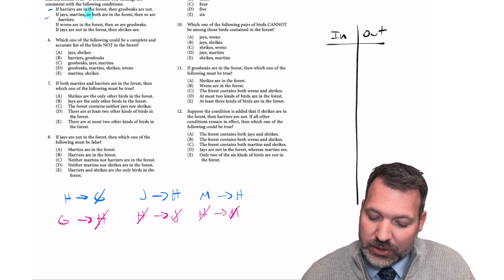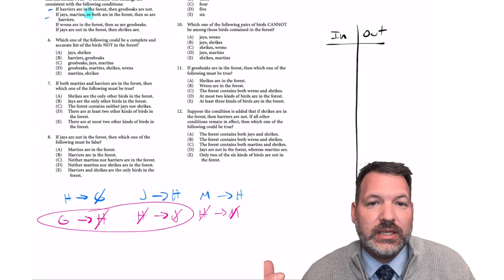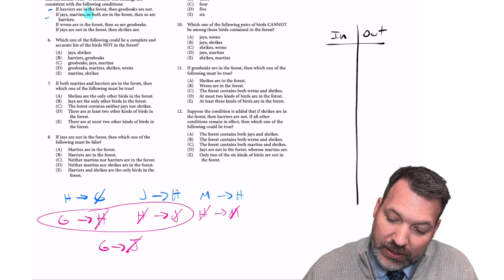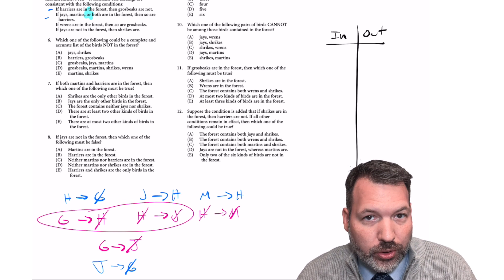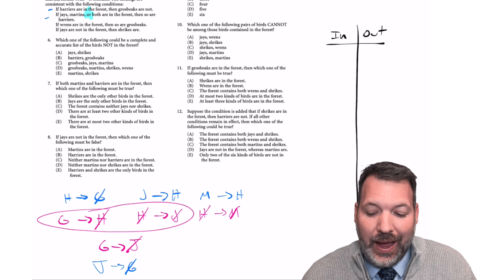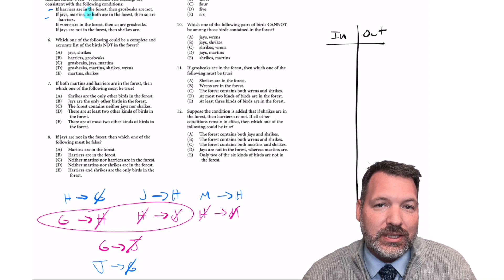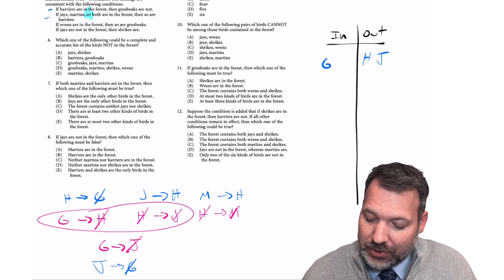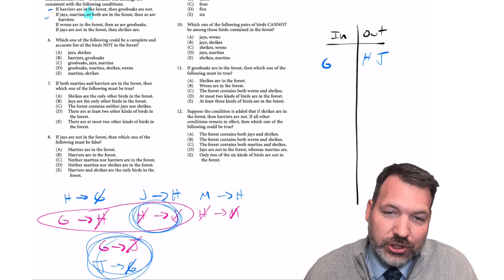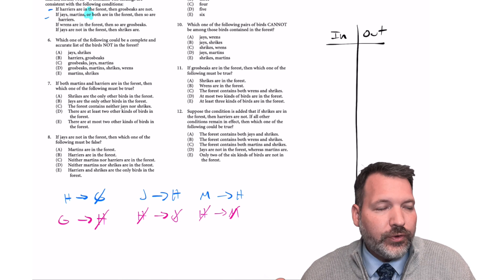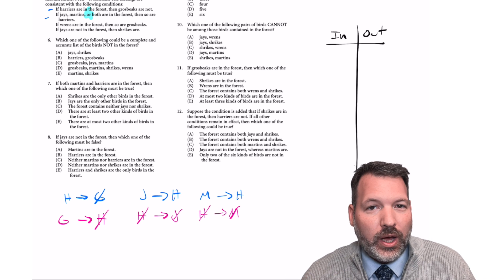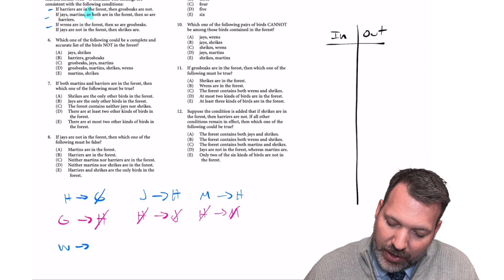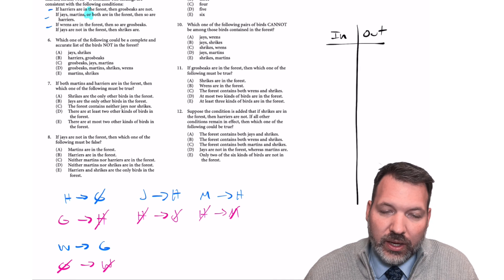One thing you want to resist doing right now is pairing a bunch of these conditional statements together for domino-train deductions — for example, if G is in, H is out, H is out, J is out, so writing down a new clue: if G is in, J is out. That's true, but in any scenario where we put G on the inside, we'll naturally follow up by putting J outside because of the H-J clue. We don't need a separate deduction. Third clue: if Wrens are in the forest, so are Grosbeaks — if W is in, G is in. Contrapositive: if G is out, W is out.